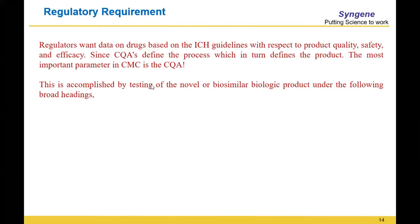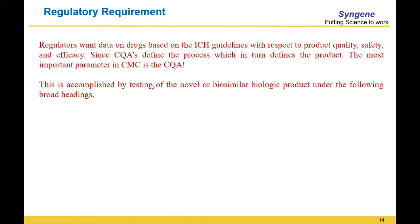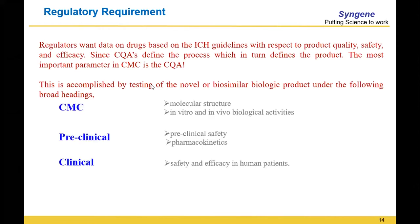If you look at the regulatory requirements, the regulator wants that we know our product, and that we are able to consistently deliver that product. Since CQAs define the process, and in biologics it is known that the process is the product — process defines your product — that again underscores why CQA determination and characterization is important. This is basically accomplished at multiple levels, but the key usage of CQA is here in chemistry, manufacturing, and control.